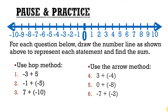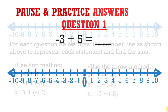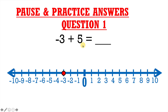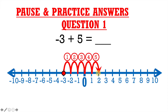Let's take a look at our answers. Number 1: negative 3 plus 5 equals blank. Negative 3 is our starting point, so we'll put a point there. We're adding positive 5, so we go five spaces to the right — 1, 2, 3, 4, 5 — and we end up at positive 2. Therefore, negative 3 plus 5 equals positive 2.